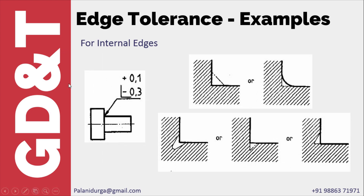When we have both a positive and a negative tolerance on an internal edge, we may end up with any of several cases: up to 0.1 mm fillet radius or a chamfer on the internal edge, or up to 0.3 mm undercut in any of three directions. These are the commonly used types of edge tolerances. For more information, you can refer to the standard to get further details.